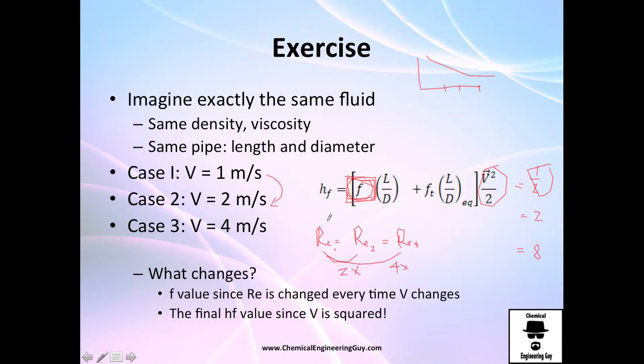So having a Reynolds number or a velocity of one meter per second will give you let's say x. Having that velocity twice you will have almost four x and so on. So what changes? Changes the f value and the velocity.